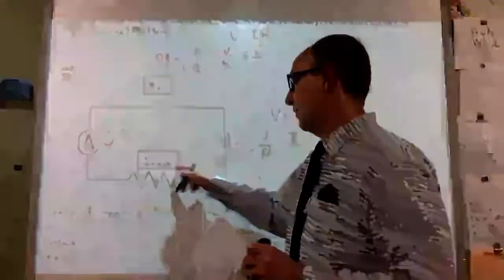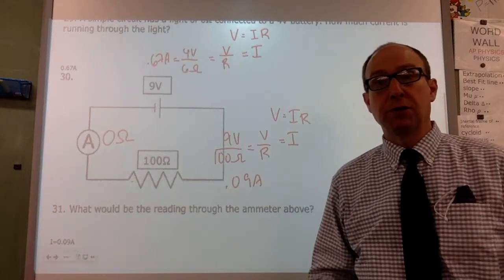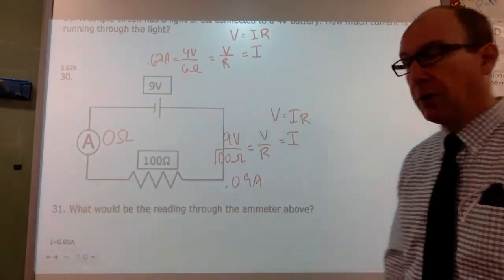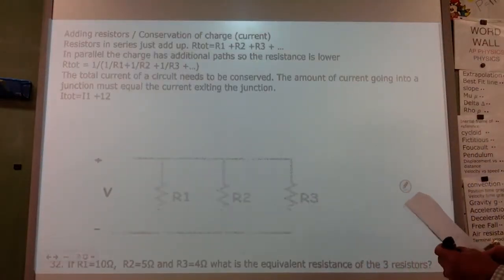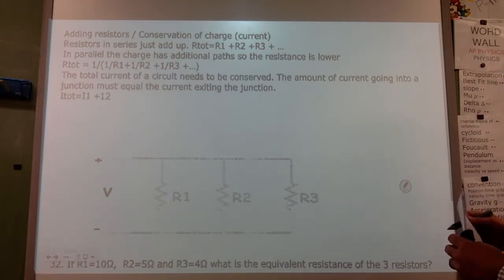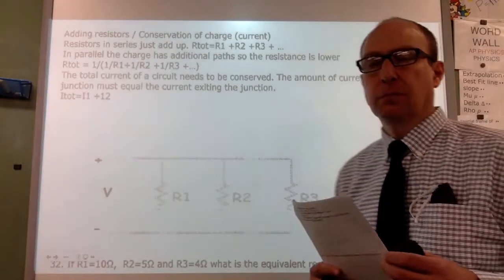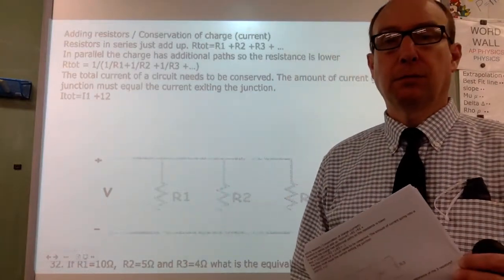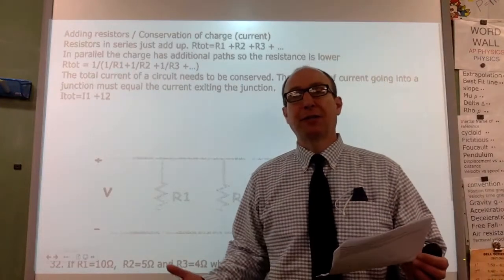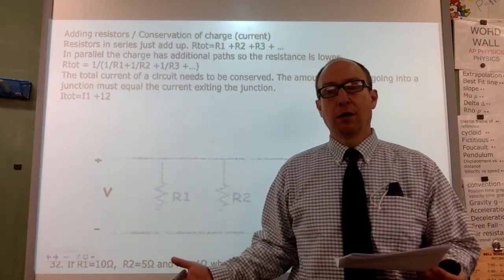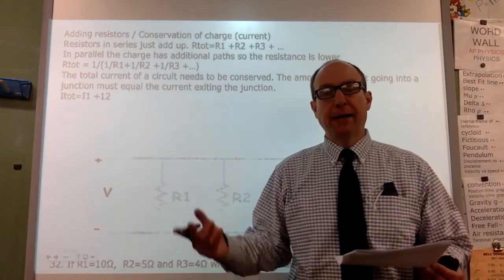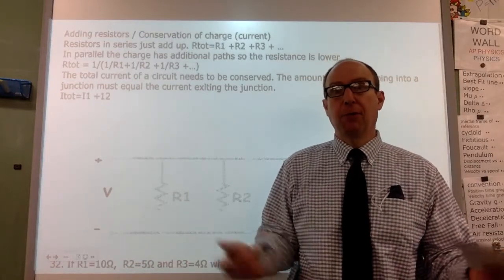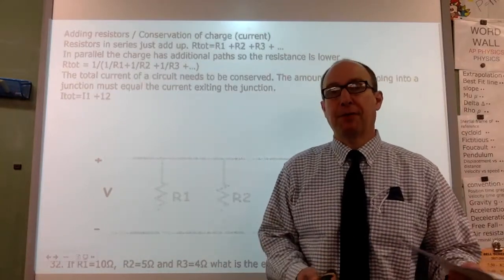Since this is the current going through the 100-ohm resistor, it's also the current coming out of the battery, going into the battery, and going through the ammeter, because current is the same in series. If resistors are in line — in series — we just add them. If they're in parallel, we use the one-over formula. In parallel, resistance actually decreases because you're giving the charge multiple paths, like using both doors to exit a room during a fire.